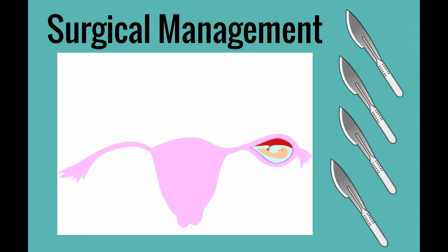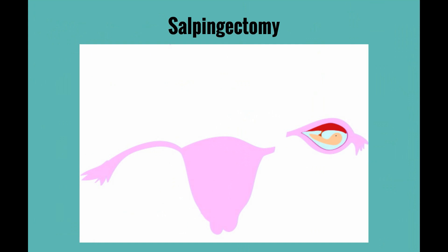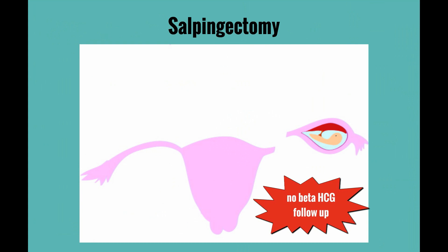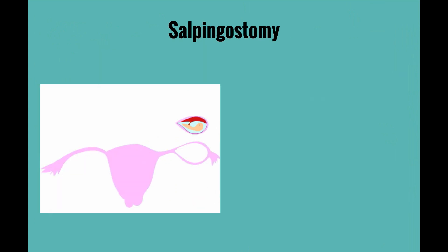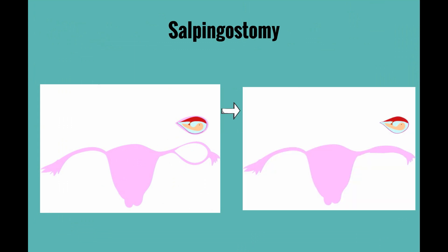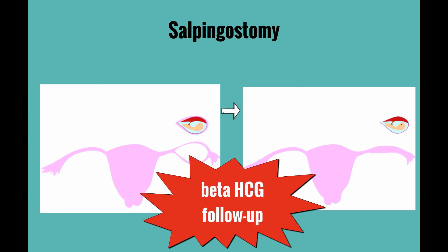There are two main options for surgical management of an ectopic pregnancy. A salpingectomy involves removal of the entire fallopian tube; no beta HCG follow-up is required since the entire pregnancy is removed with the tube. The other option is a salpingostomy, in which a small hole is made in the fallopian tube and the pregnancy is removed. Beta HCG levels must be followed after a salpingostomy to ensure the entire ectopic pregnancy has been removed.